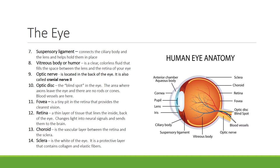The suspensory ligament connects the ciliary body and the lens and helps hold them in place. The vitreous body or vitreous humor is a clear colorless fluid that fills the space between the lens and the retina of the eye. The optic nerve is located in the back of the eye, also known as cranial nerve number two. The optic disc is your blind spot — the area where axons leave the eye and there are no rods or cones. Blood vessels are found here as well.